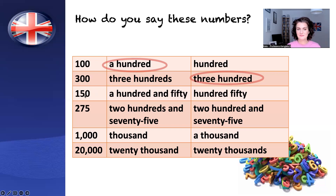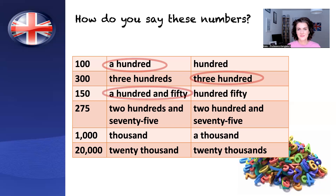Let's look at the next one. Do we say 'a hundred and fifty' or 'hundred and fifty'? A hundred and fifty. We use the word 'and' to join large numbers. Do we say 'two hundred and seventy-five' or 'two hundred and seventy-fives'? Two hundred and seventy-five. Remember, we don't use plurals in numbers.